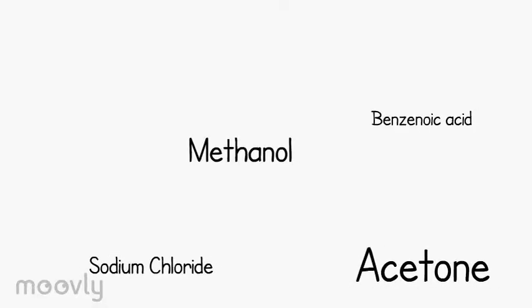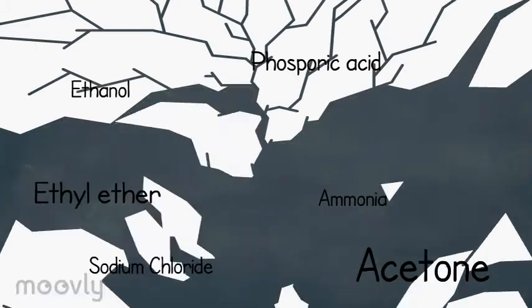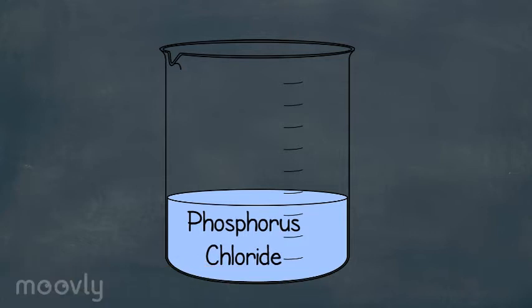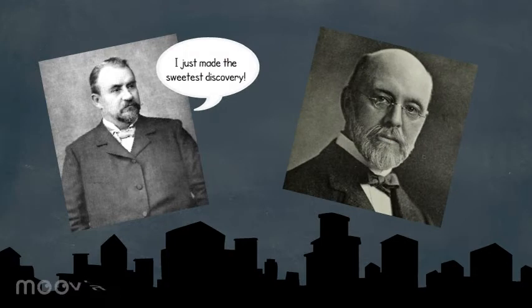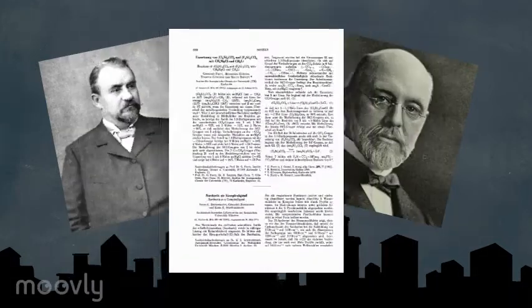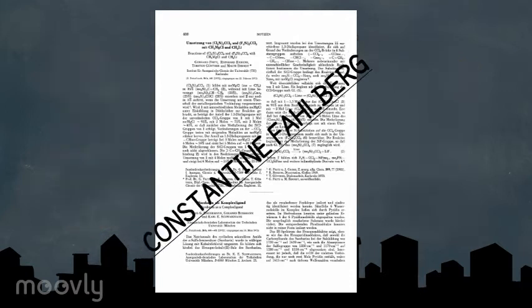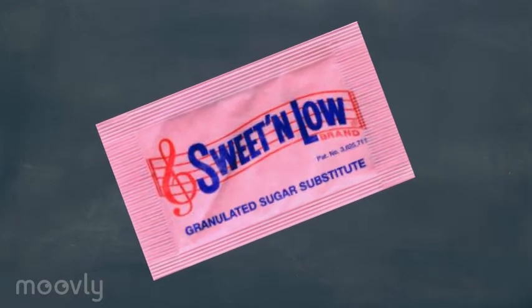The chemist went back to the lab and tasted every chemical he was previously working with. Eventually, he discovered that the sweet flavor was the result of a solution of sulfurbenzoic acid, phosphorus chloride, and ammonia. Fahlberg straight away wrote to Ramzan describing his findings, and in 1878 published a paper under both their names. This however did not last, and since 1886, Constantine Fahlberg was named the sole creator of saccharin, the first artificial sweetener.